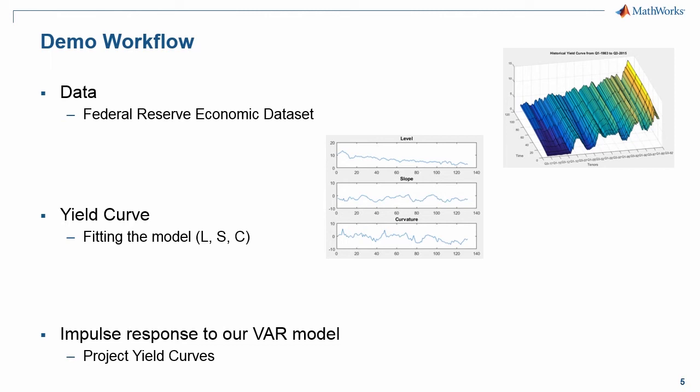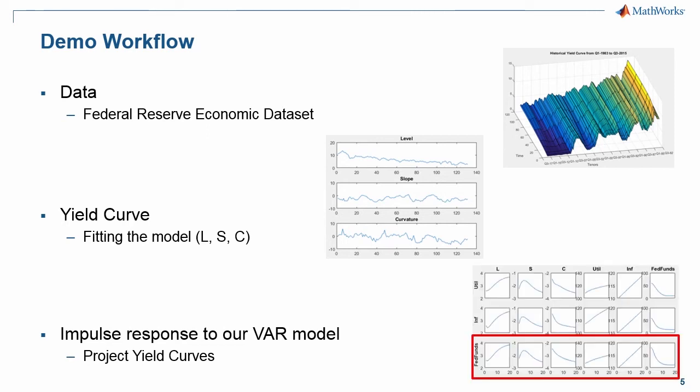This example here shows an impulse response to our vector autoregressive model, showing how all the parameters in our model respond to an impulse in Fed funds rate.